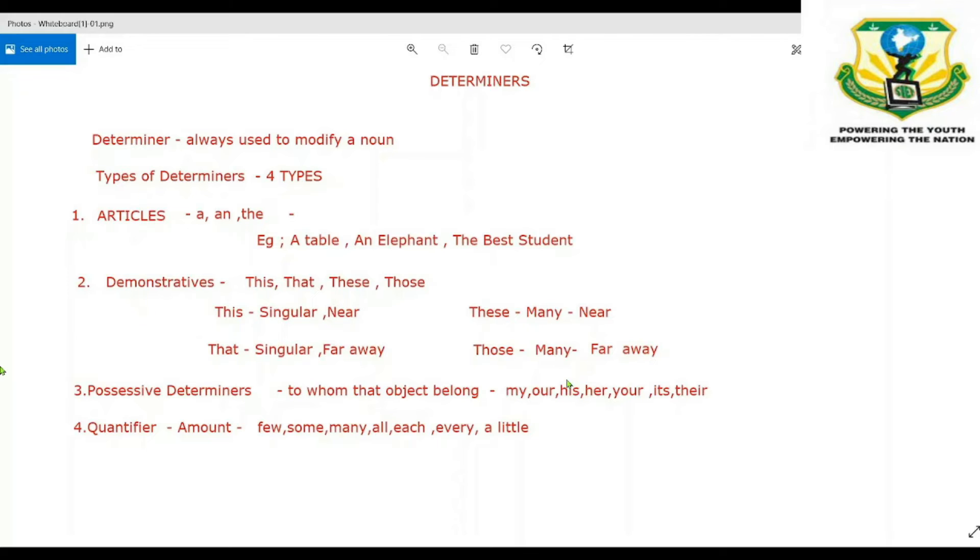And the third type is possessive determiners. Possessive determiners always determine the possession of an object—that means to whom that particular object belongs. For example, words like my, our, his, her, your, its, their. Ennode, unngalode, avangalode, avanode, avarode. We call all these words possessive determiners.